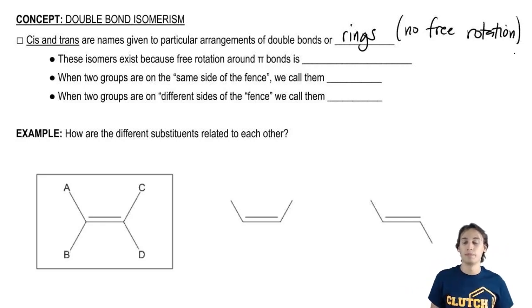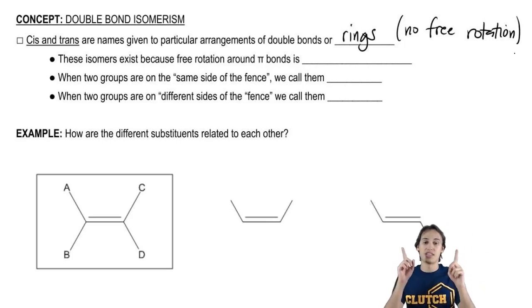So for example, a double bond, if two groups are oriented in the same position, remember that a double bond has a lot of regions of overlap, so it can't twist out of shape. So that means the double bond is stuck there.